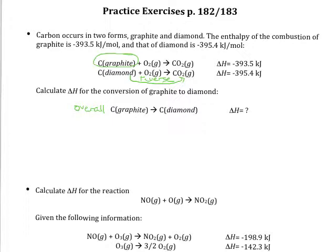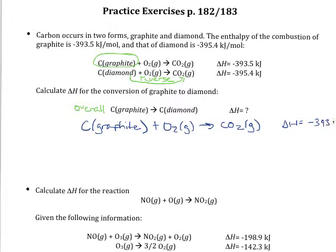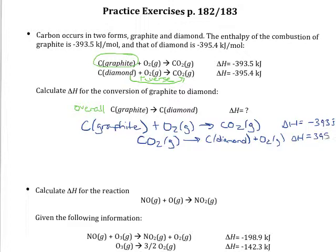I'll write these two reactions out. I'm keeping the carbon-graphite reaction as is, with a ΔH value of negative 393.5 kilojoules. Now I need to write the other one in the opposite direction — forming carbon dioxide and producing the diamond and O₂. Since I flipped the direction, I need to flip the sign, so this ΔH is going to be positive 395.4 kilojoules.